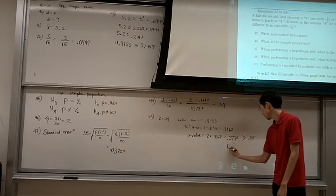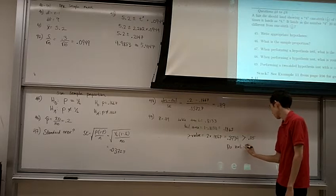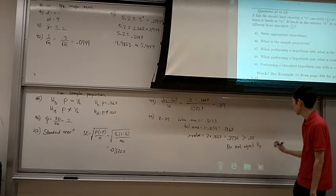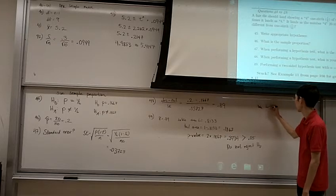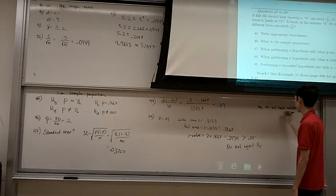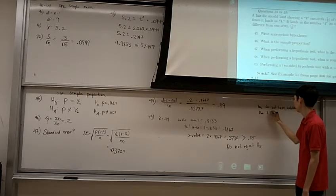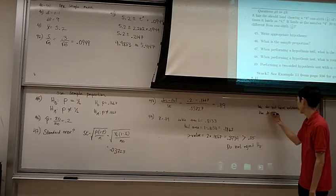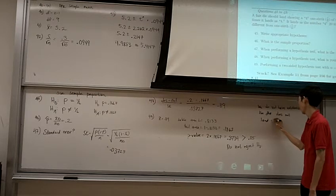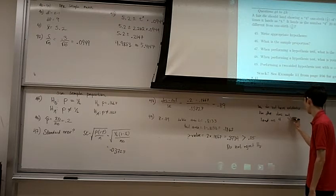So we do not reject our null hypothesis, but we'd say we do not have evidence that the die does not land on 4 one-sixth of the time.